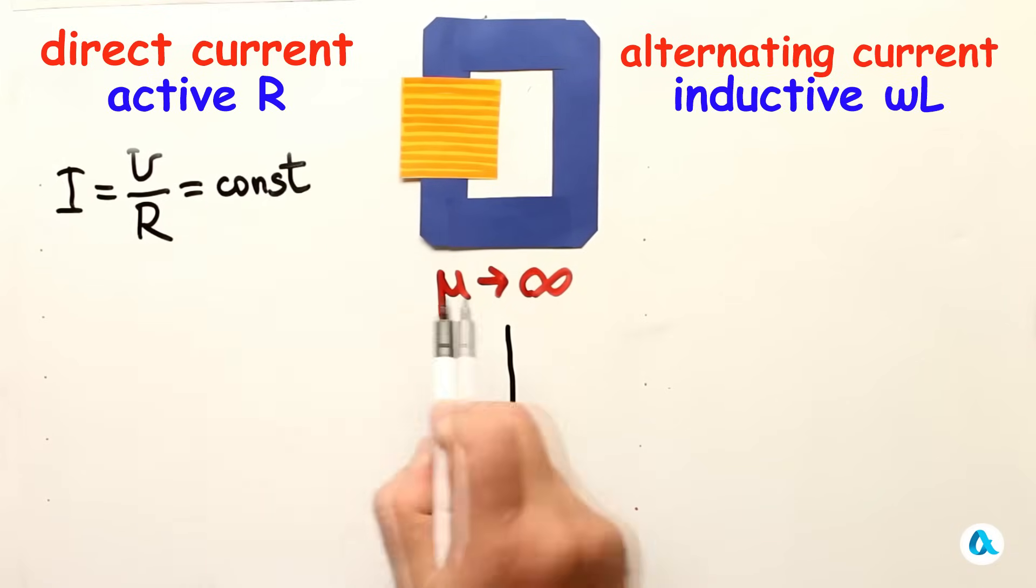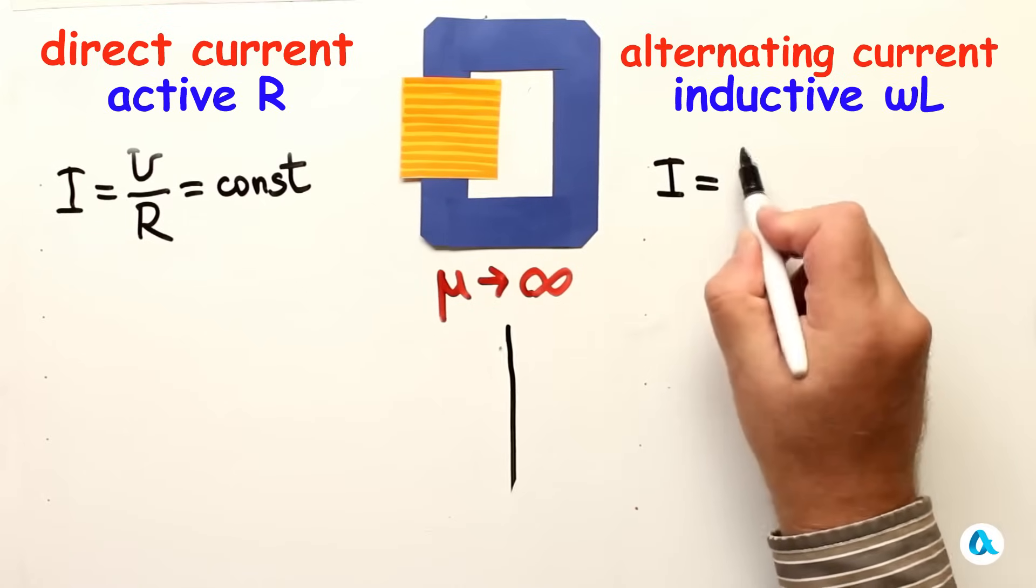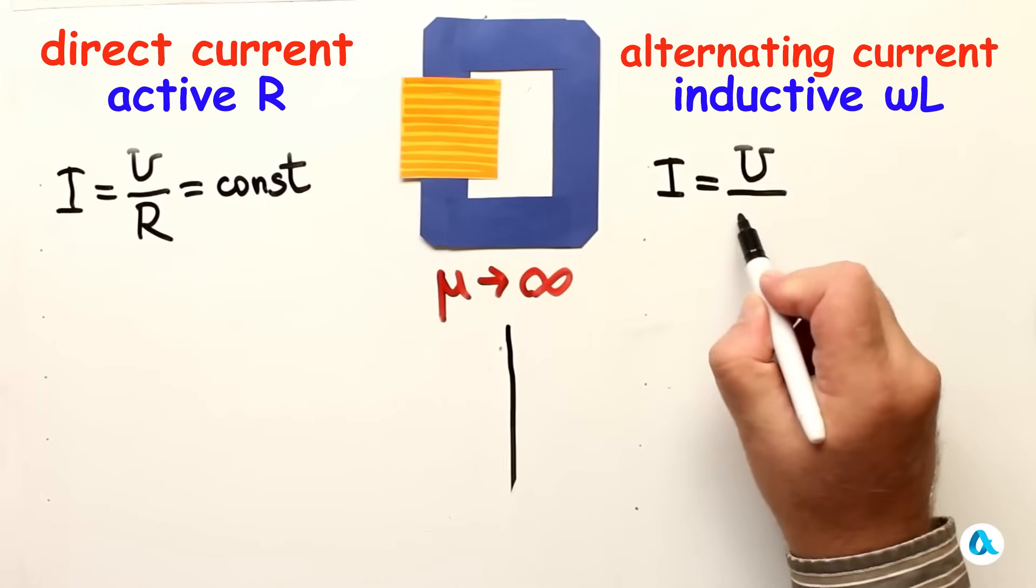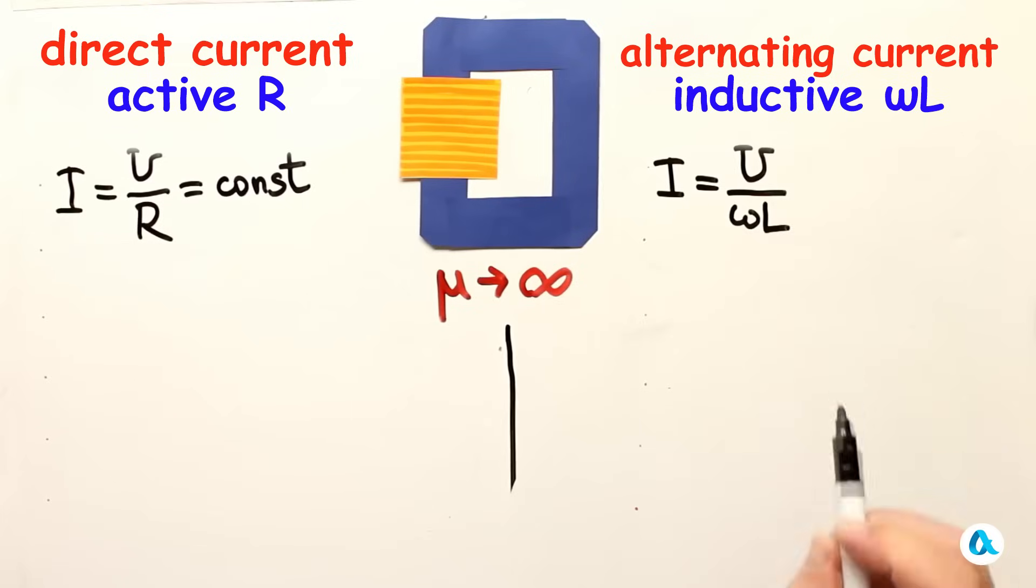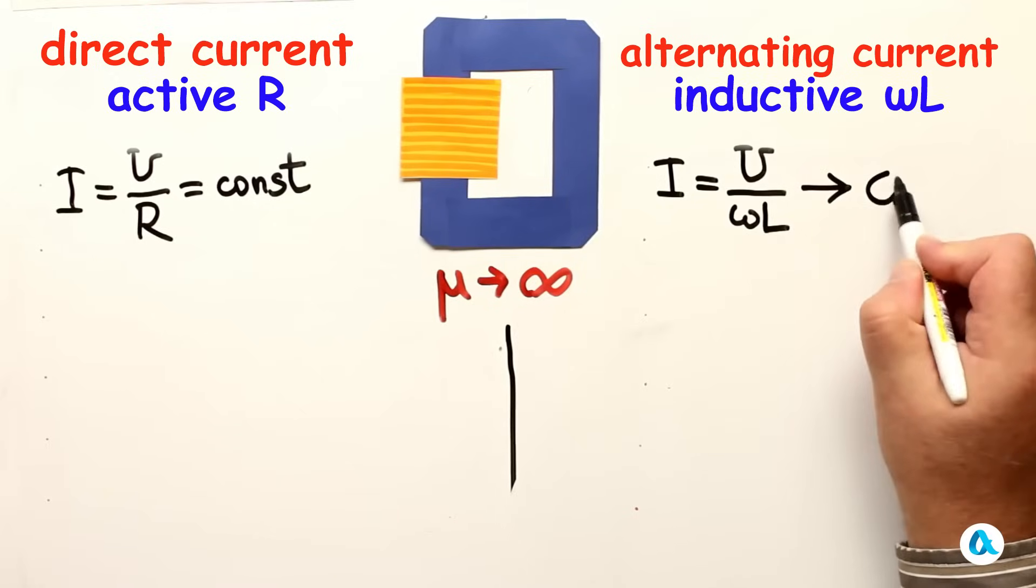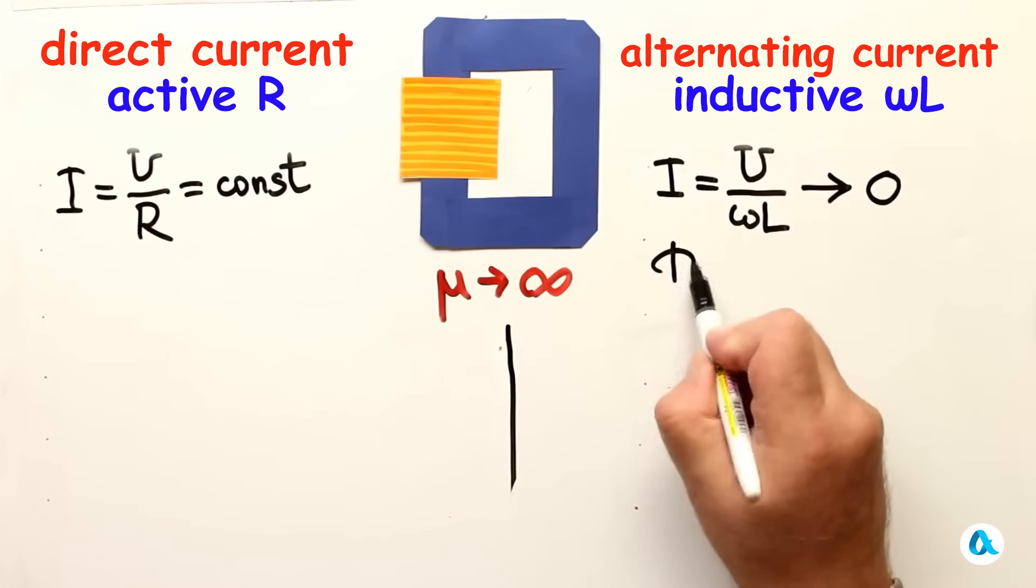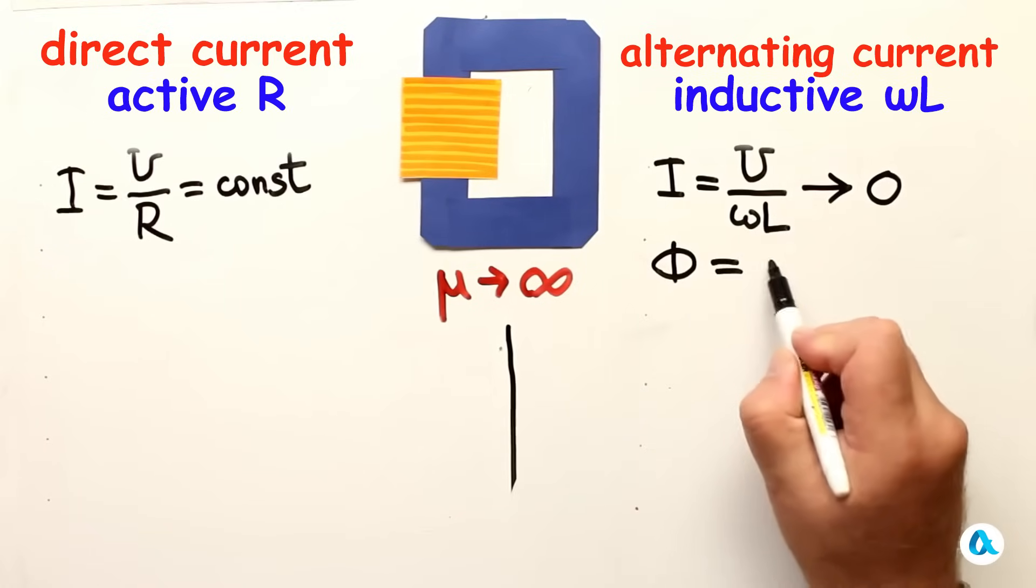does not change at all when mu approaches infinity. When I write here constant, I am specifically reflecting the behavior of the current as mu changes. And in this situation the current amplitude is U divided by ωL. L as it approaches infinity also approaches infinity. And therefore the amplitude of the current will tend to zero.